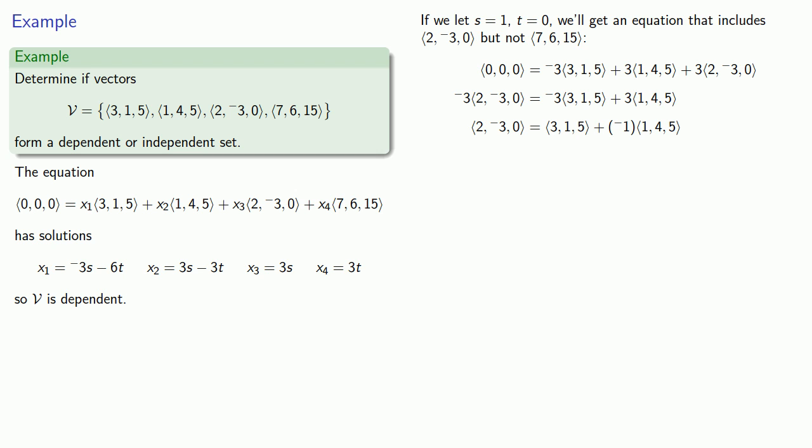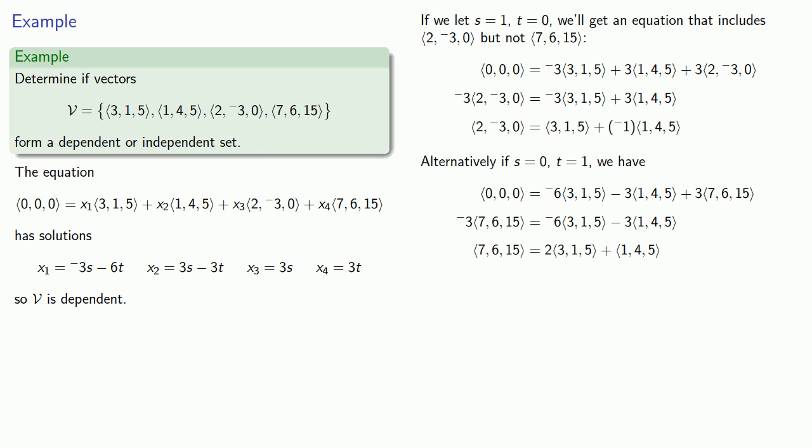Well, that works so well. Let's try it again. But this time we'll let s be zero and t equal to one. And in this case, we'll have an equation that involves the fourth vector, but not the third vector. And so we'll be able to solve for that fourth vector. And we'll find that (7, 6, 15) is two times (3, 1, 5) plus (1, 4, 5).